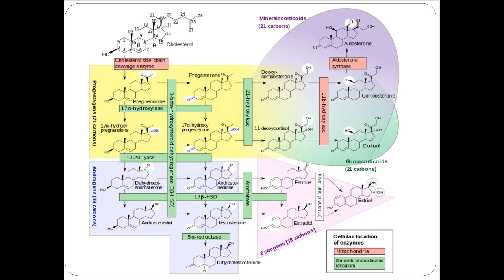Focusing on glucocorticoids: this diagram with a bunch of structures shows that all steroid hormones come from the same source — they're all closely related. Cholesterol is the building block. From there you build progestins, then aldosterone (a mineralocorticoid), then androgens synthesized from progestins, and estrogens synthesized from androgens. So they're all connected. Instead of messing around with hormone synthesis, we usually prefer to manipulate hormone receptors.